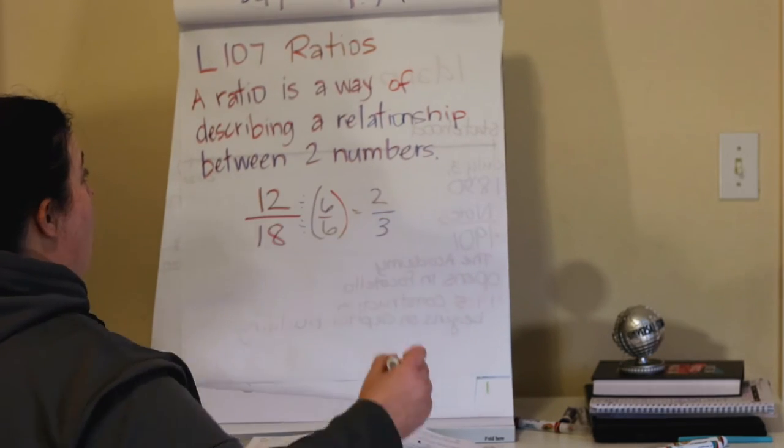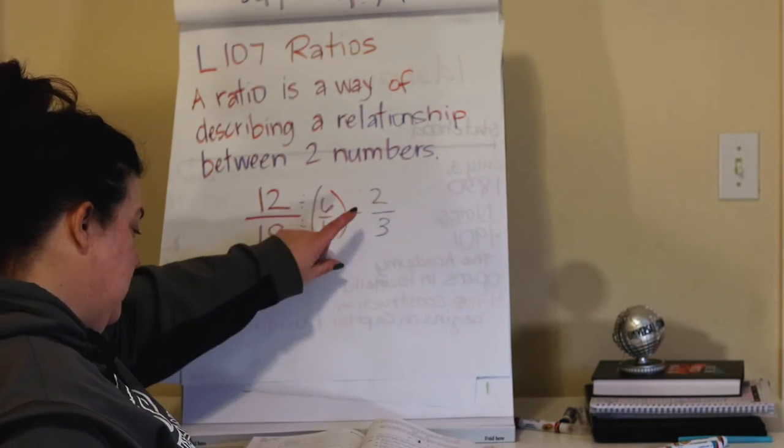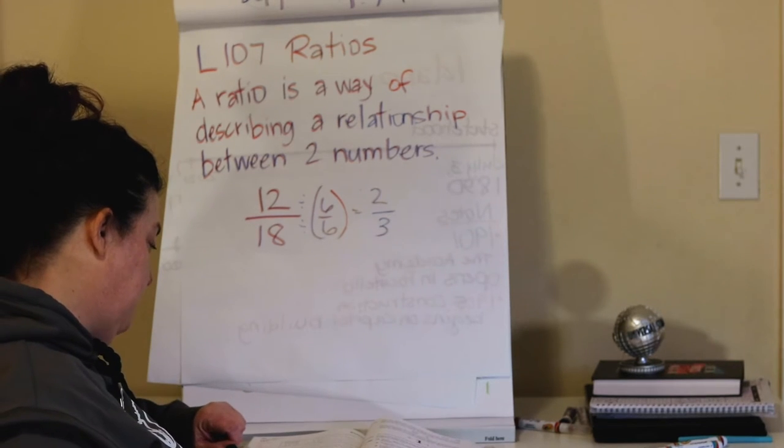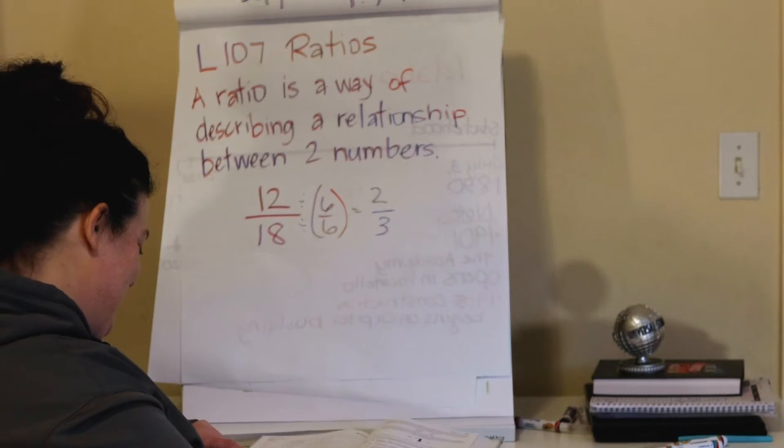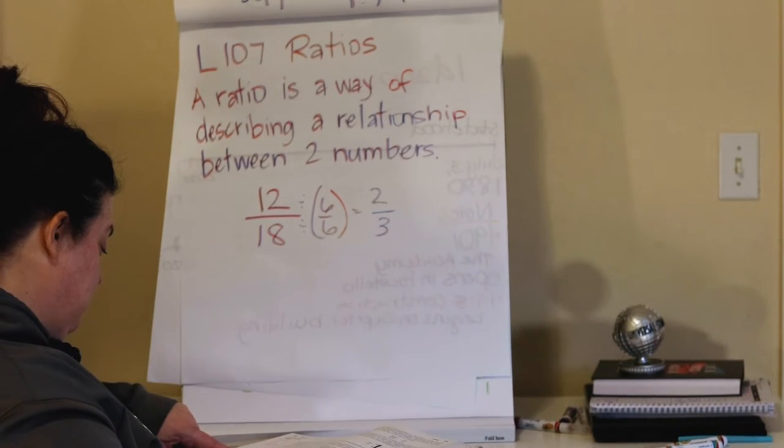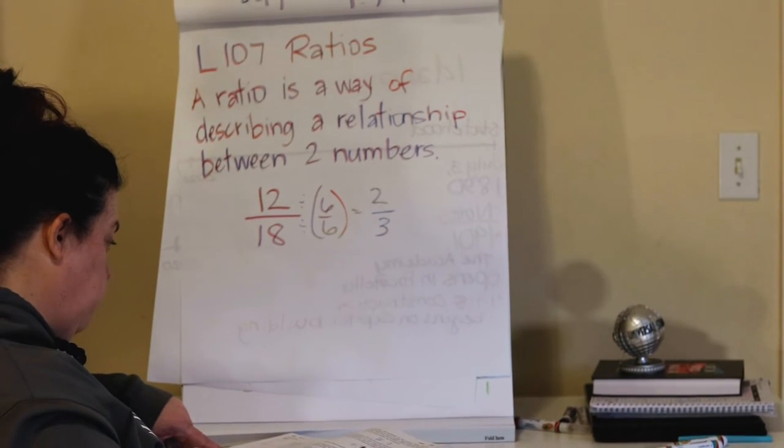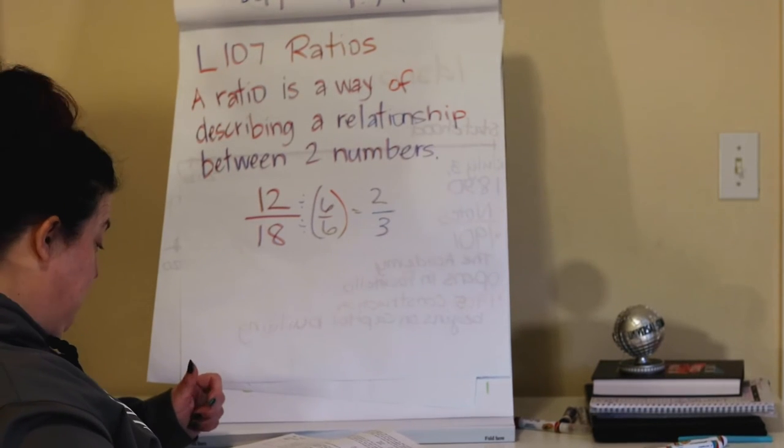So our ratio of boys to girls is 12 to 3. Actually, that's a 2 to 3. Okay, so let's look at our example.